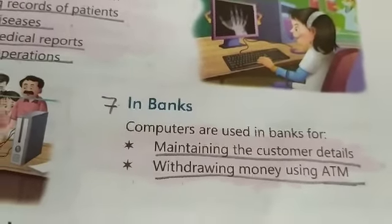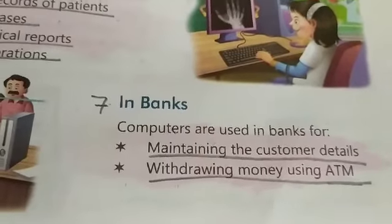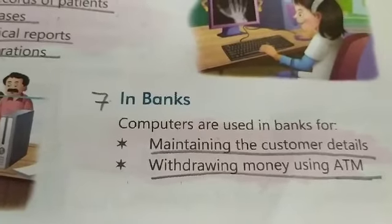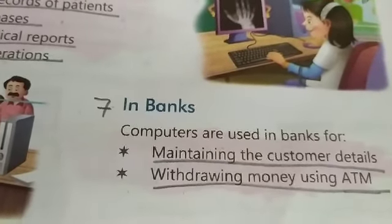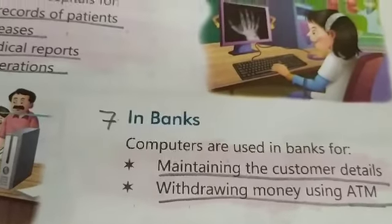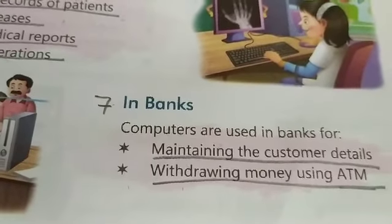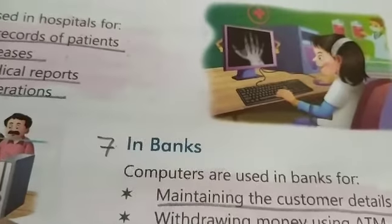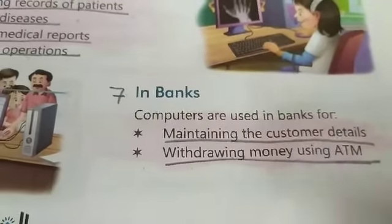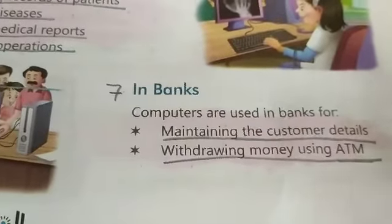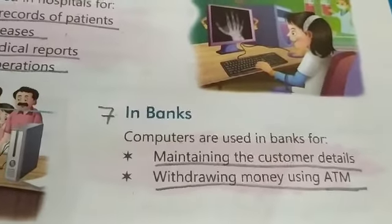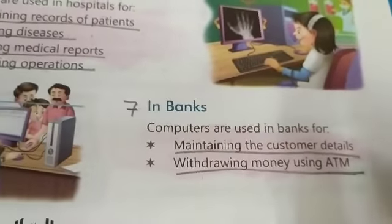Suppose hum amount daal rahe hain — malijiye mere account mein 5,000 hain aur hum 10,000 ka amount daalte hain, toh hamare account se woh paise nahi niklenge. Kyunki hamare account mein sirf 5,000 hain. Toh yeh detailing jab us computer ke paas hai, tabhi woh humein nahi de raha hai. Saari detailing usse feed hoti hai, isi wajah se koi garbari nahi hoti hai.